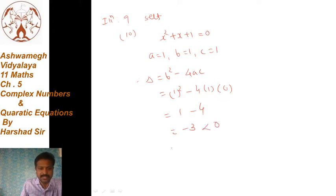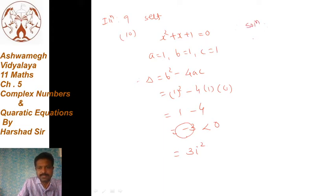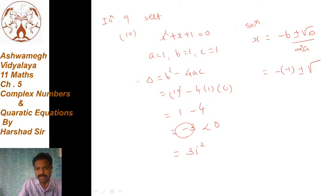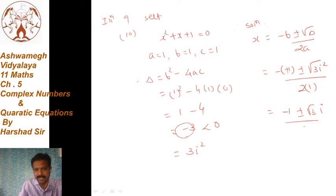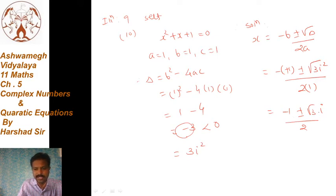तो उस वक्त delta के बदले, minus 1 के बदले हम क्या लेंगे? 3i² — minus 1 के बदले हम i² ले लेंगे। Now the solution: x = (-b ± √(discriminant)) / (2a) = (-(-1) ± √(3i²)) / (2×1). So: minus 1 ± √3 · i, i को अलग से लिखना है, root के अंदर नहीं। Solution of this quadratic equation: x = (-1 ± √3 i) / 2.